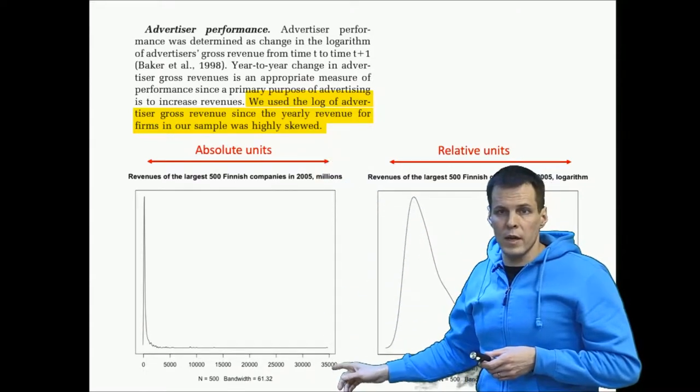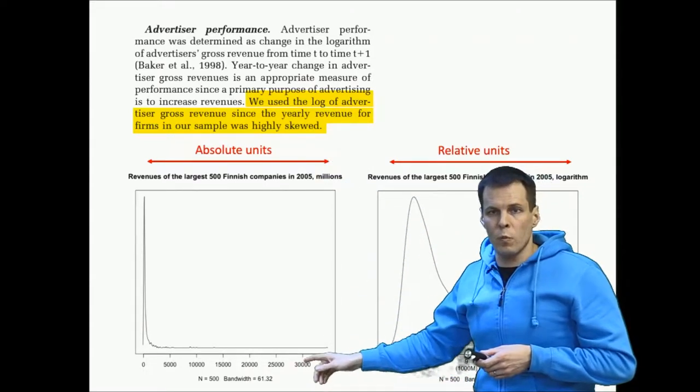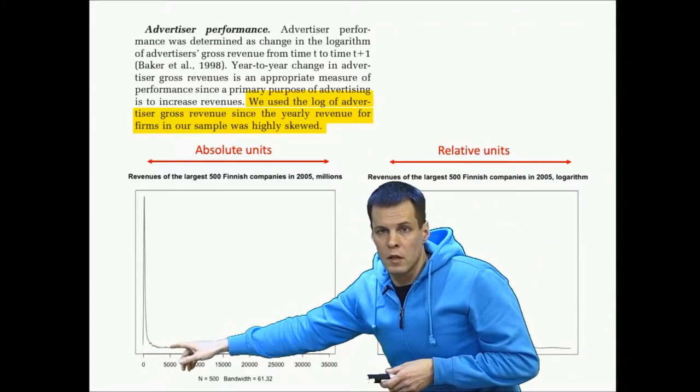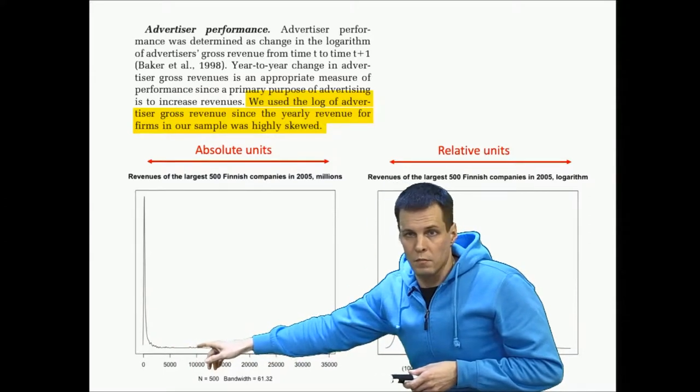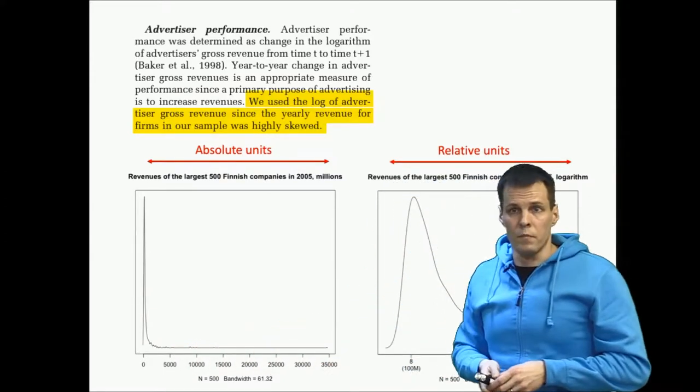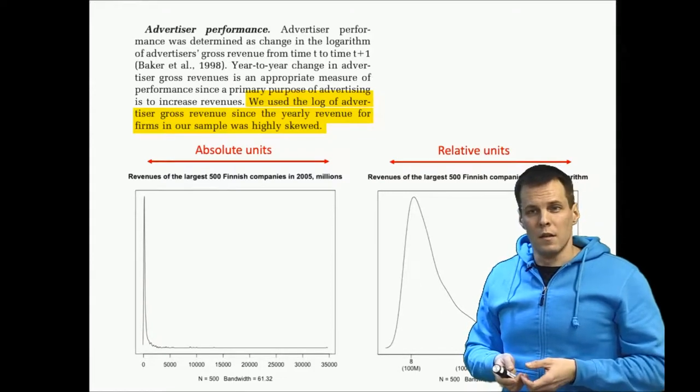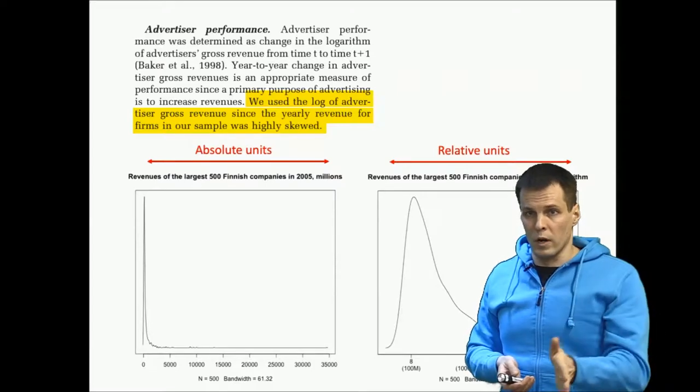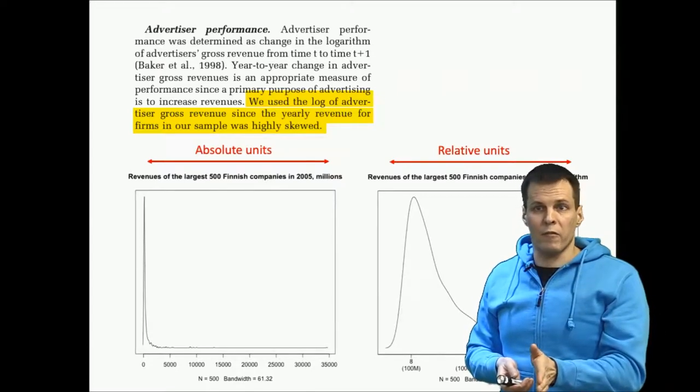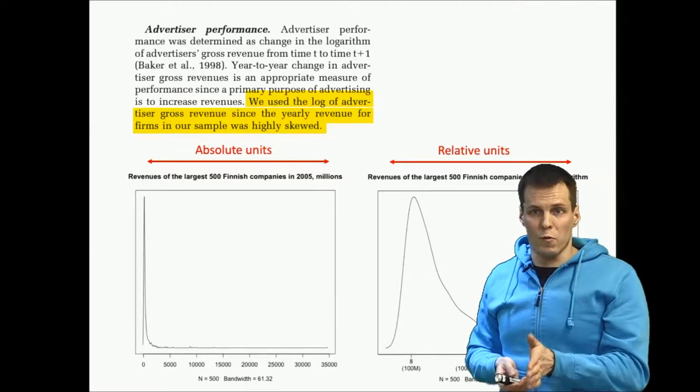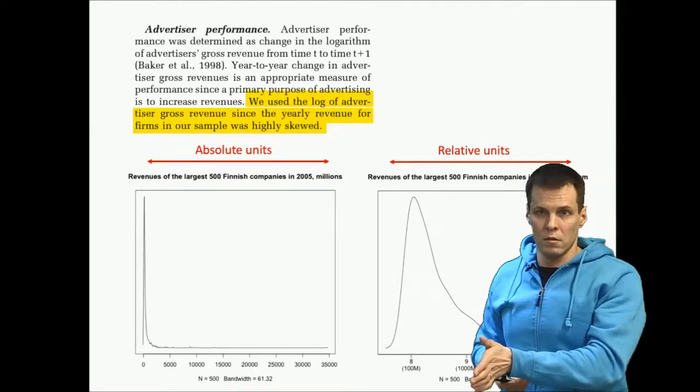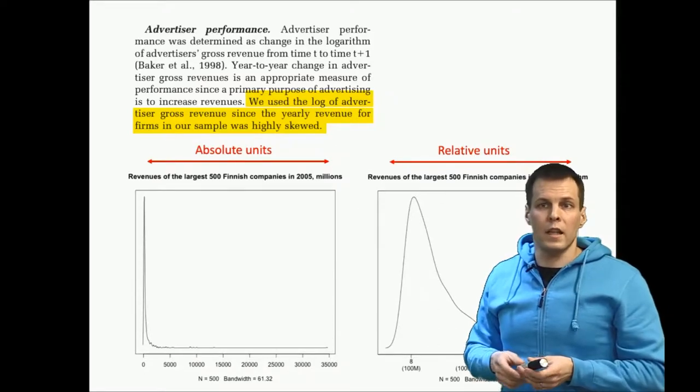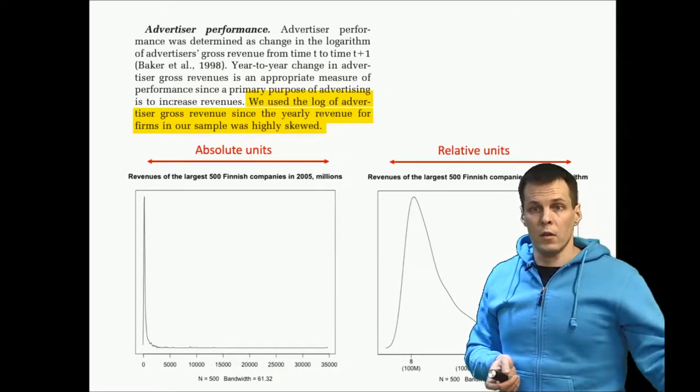So absolute units here means that the difference between 0 and 1 billion is the same as 1 billion and 2 billion. So let's think for a while, does it make sense to say that when company grows to 0 to 1 billion is the same kind of transformation for the company than when it grows from 1 billion to 2 billion? No, that doesn't make any sense. Also, companies generally don't say that we grew this and this many euros.